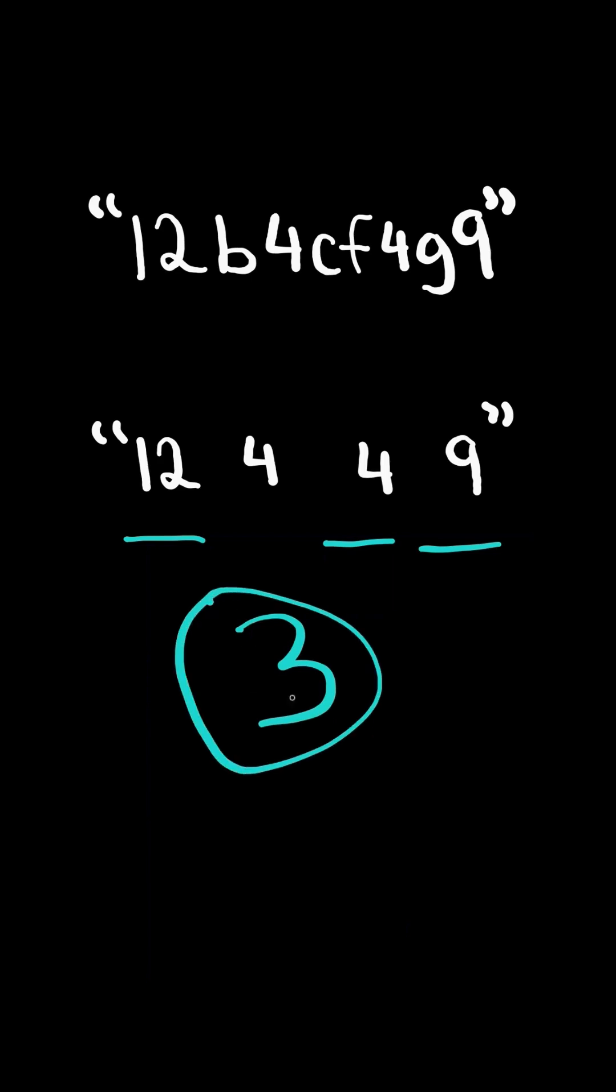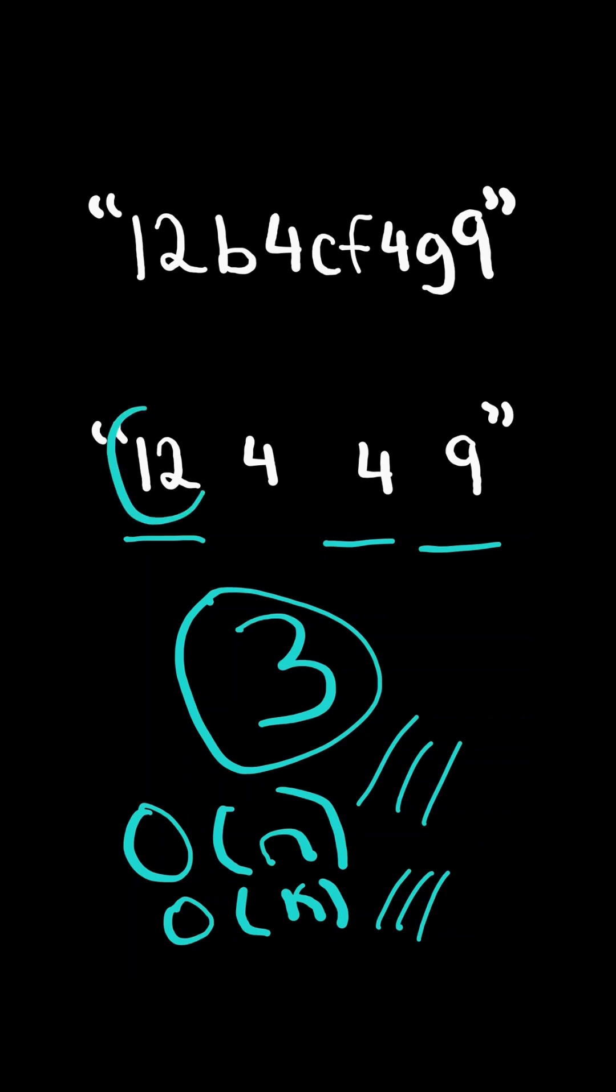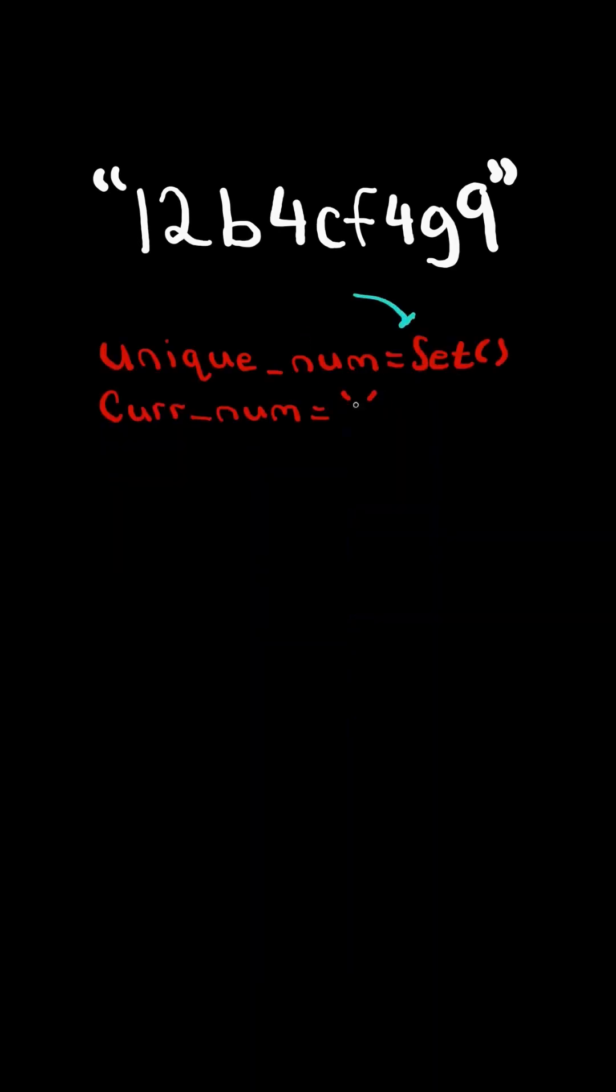In this case, there are three different integers. We will solve this in O of n time and O of k space, where k is the number of distinct integers. We will create a set and a variable to keep track of the current number.